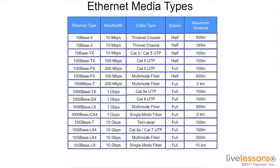I have included a chart encompassing some of the most popular Ethernet types, the different bandwidth that are available for each of those types, as well as the type of cable they use, the duplex rate that they use, and the maximum distances. This is something that you're going to want to become very familiar with, maybe even memorize, because this topic is covered in the exam objectives.